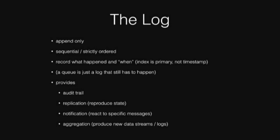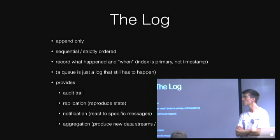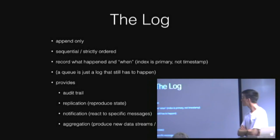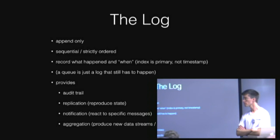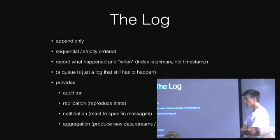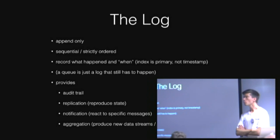So why am I talking about a log? A queue is a bit like a log that hasn't happened yet. A log tells you what happened and when, and a queue tells you things that you would like to happen. But basically they're the same thing. It's an append-only data structure. It's strictly ordered, sequential, and it records what happened — or will happen — and when. 'When' is not actually the timestamp; 'when' is the index in the queue or in the log. You can have a timestamp as well, but your timestamps may or may not be strictly ordered.